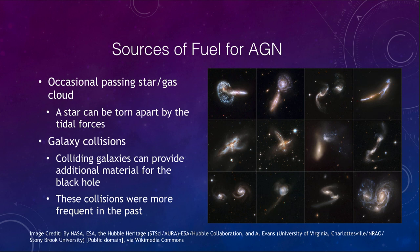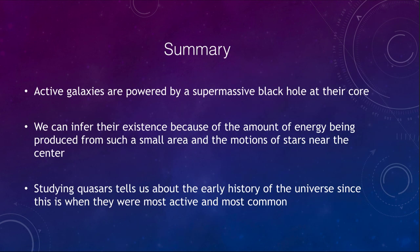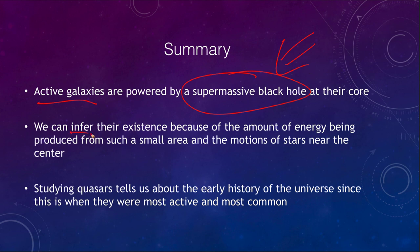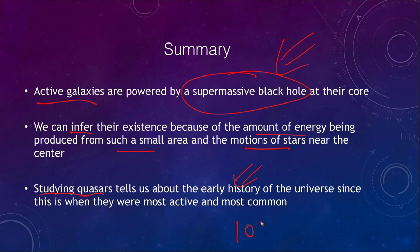To summarize what we've covered in this lecture: active galaxies are believed to be powered by a supermassive black hole at their core. We can infer the existence of these black holes from the amount of energy produced in such a small area and the motions of stars near the center. Studying quasars tells us about the early history of the universe, since this is when they were most active and common. For the last 10 billion years, nothing has been able to feed a massive black hole enough to make a quasar, as the universe expanded and material spread out.